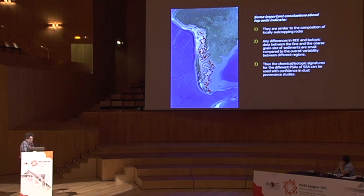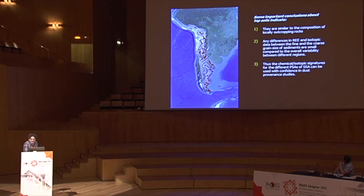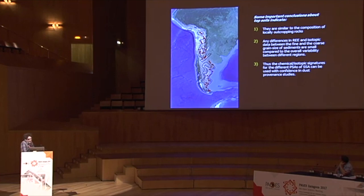Some important conclusions about topsoil samples: first, the topsoil sample compositions are similar to the composition of the locally outcropping rocks in each area. Also important is that any differences in rare earth element and isotopic composition data between the fine and coarse grain sizes are small compared to the overall variability that exists between different regions. We conclude that the chemical-isotopic composition signature for different potential source areas of Southern South America can be used with confidence in dust provenance studies.